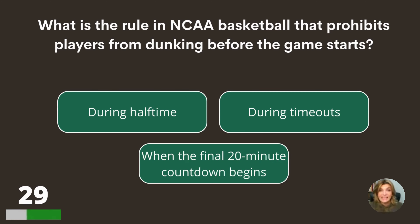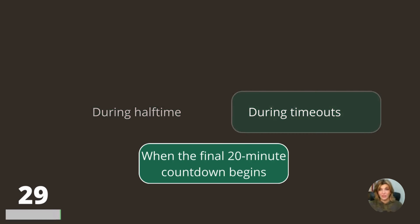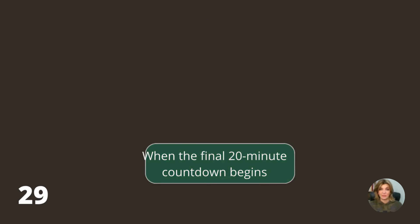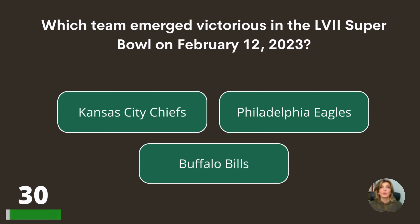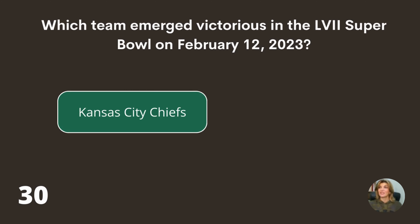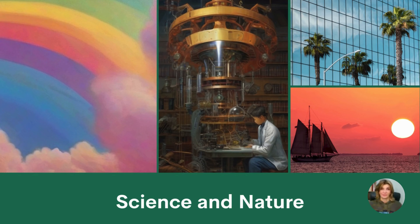What is the rule in NCAA basketball that prohibits players from dunking before the game starts — during halftime, during timeouts, or when the final 20-minute countdown begins? When the final 20-minute countdown begins. Which team emerged victorious in the 57th Super Bowl on February 12, 2023? The Kansas City Chiefs.